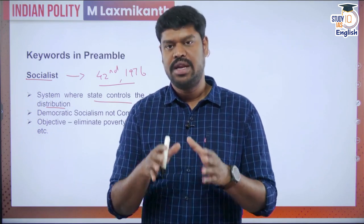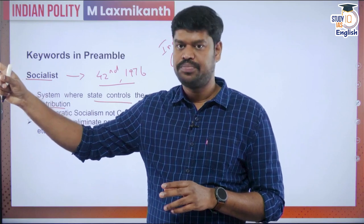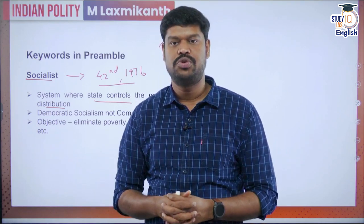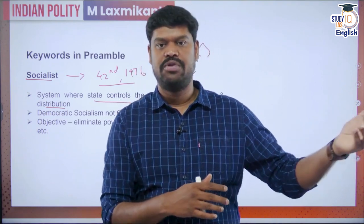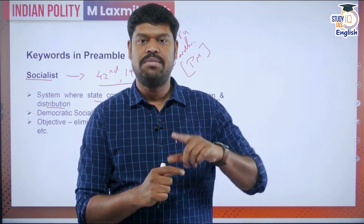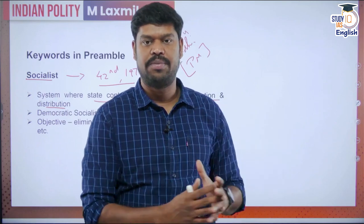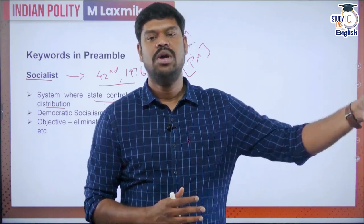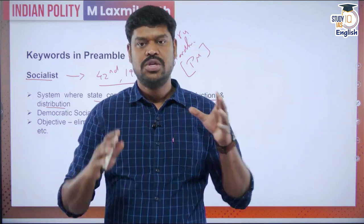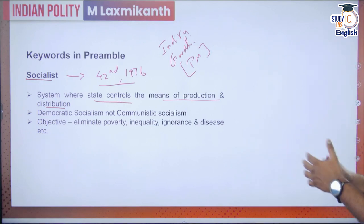In India we have democratic socialism, which means there can be simultaneous existence of both private and public means of production. Where it is required, the government will control the means of production and distribution; where not important, they can liberalize and give it to private sectors. For example, railways is 100% with the state, but airways has been privatized. There are government hospitals and private sector; government-run educational institutions and private sectors. This is democratic socialism.